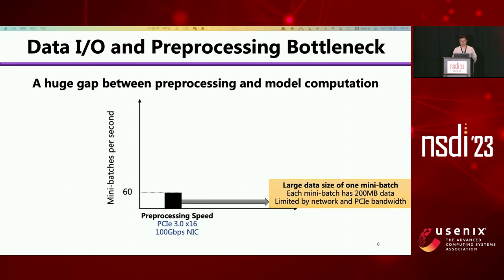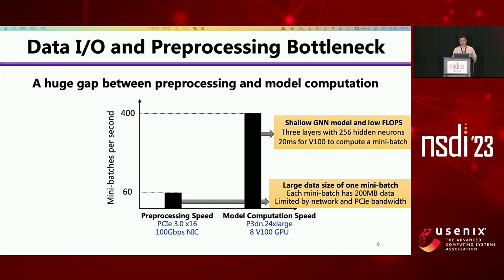Without optimization, using a 100 Gbps NIC, the pre-processing speed is 60 batches per second. This is due to the large data size of one mini-batch. On the other hand, the model computation speed is very fast — for a GPU server with 8 A100 GPUs, it can consume 400 batches per second. The reason is that state-of-the-art GNN models are shallow and computation is very fast. Hence, there is a huge gap between pre-processing and model computation.